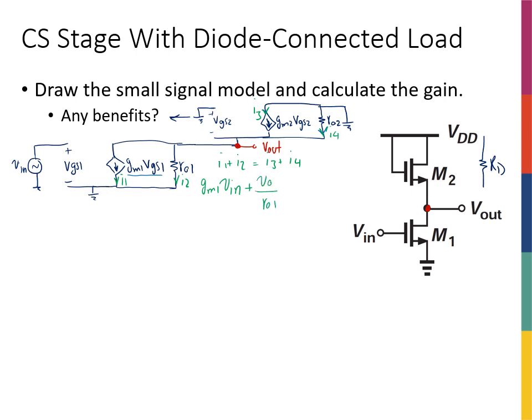...equals i3, which is gm2*Vgs2. Now Vgs2 is the voltage between the gate (ground) and the Vout node, which is the opposite of Vout, so Vgs2 = -Vout. Thus i3 = gm2*(-Vout), and i4 = (0 - Vout)/ro2, so plus (-Vout)/ro2. Now I have everything expressed in terms of Vin and Vout, with ro1, ro2, gm1, and gm2 known from DC analysis.